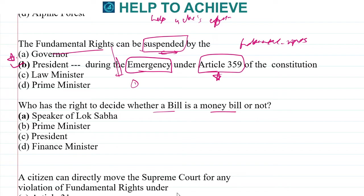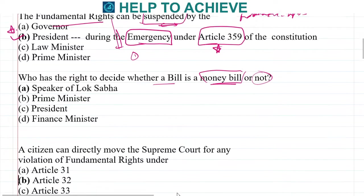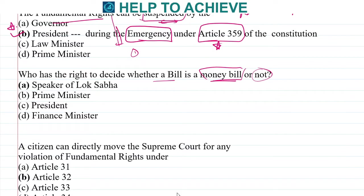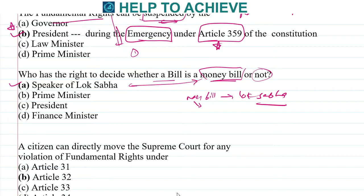Next: who has the right to decide whether a bill is a money bill or not? There are money bills, financial bills, and many bills introduced in Parliament. A money bill can only be introduced in the Lok Sabha, and the Speaker of the Lok Sabha will look into the bill and decide whether it is a money bill or not. So the Speaker of Lok Sabha has the authority to decide.